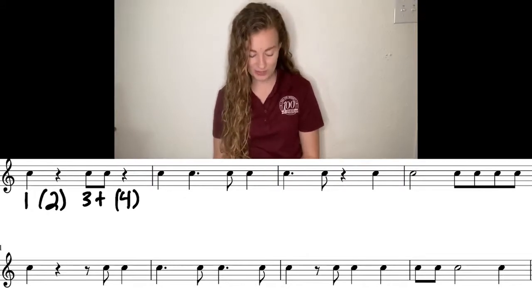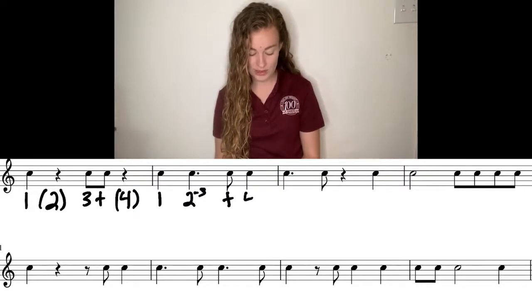Next measure, we have beat one, then our first dotted quarter note on beat two. So we have two dash little three, which means this eighth note is on the and of three. And then that last quarter note on beat four.